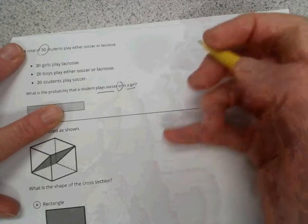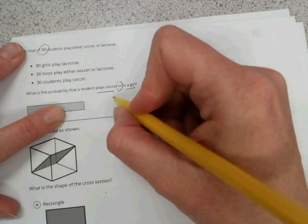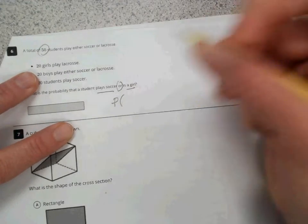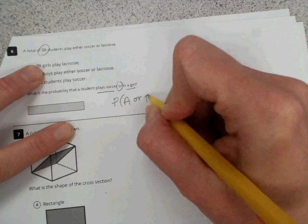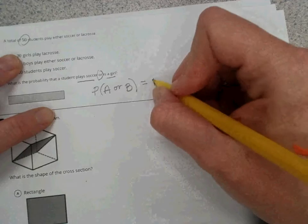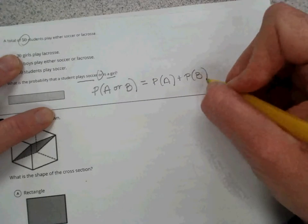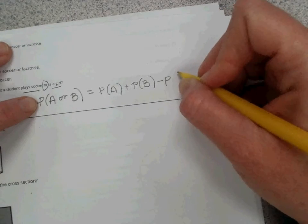So if you've studied probability, this should bring to mind the addition rule of probability, which is the probability of A or B is going to equal the probability of A plus the probability of B minus the probability of A and B.